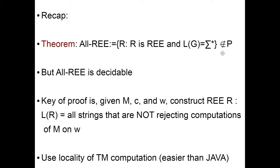To recap: we have seen the theorem that all-RE↑ — the language of regular expressions with exponentiation whose language is sigma star — is not in P. This is a somewhat natural language which is not in P. Remember, things like 3-SAT, subset sum, and 3-coloring — some people think they're not in P, but we don't know how to prove it. But this can be proved unconditionally that it's not in P.